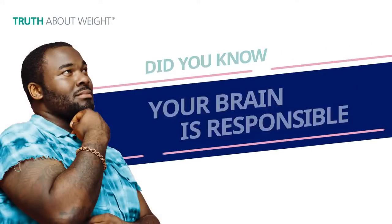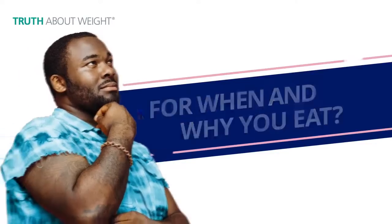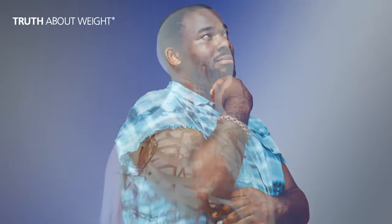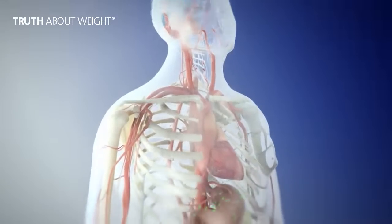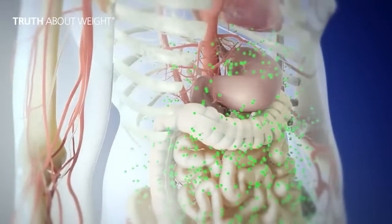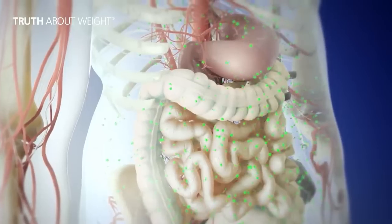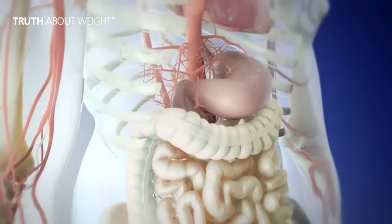Did you know your brain is responsible for when and why you eat? It's true. All day, your nervous system, which includes the brain, receives signals about your appetite from hormones that come from different parts of your body, like the stomach, intestines, and fat tissue.